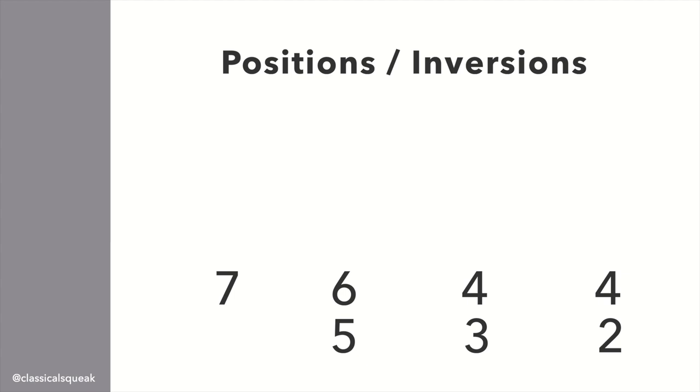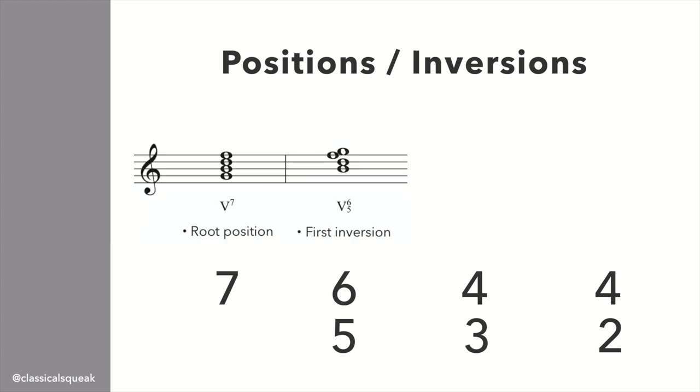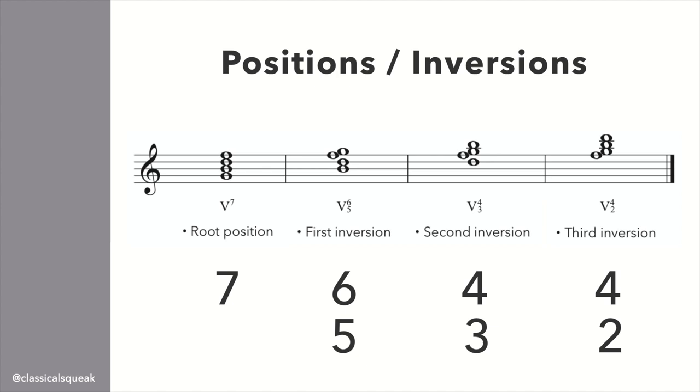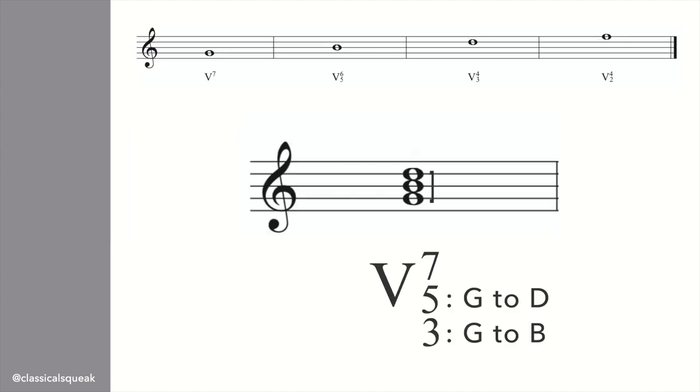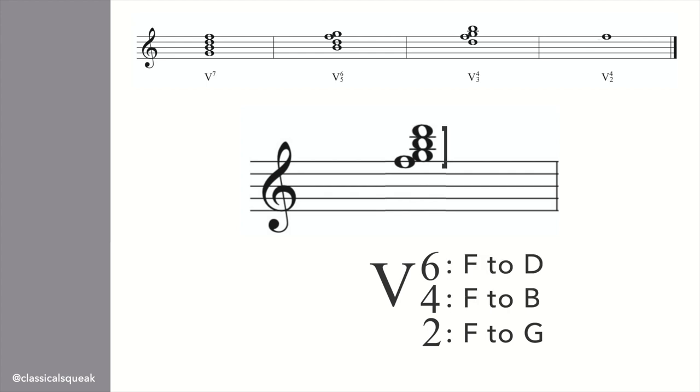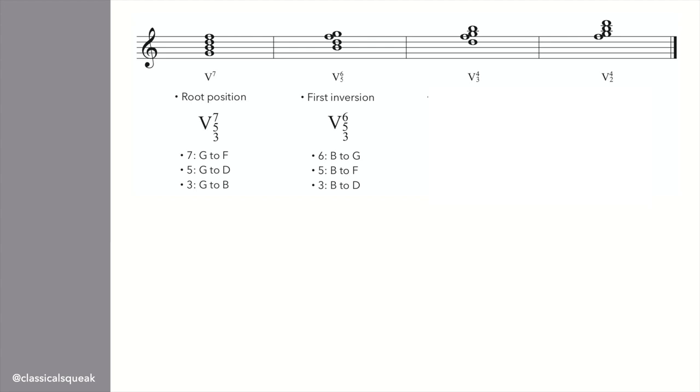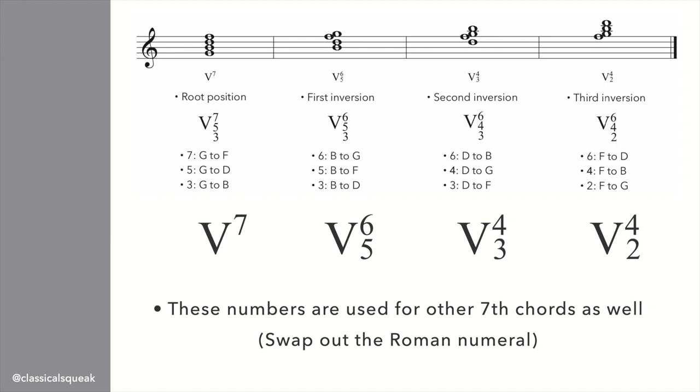All right, on to these numbers. The abbreviated form is what you'll commonly see. 5-7, 5-6-5, 5-4-3, and 5-4-2. The long form is 5-7-5-3, 5-6-5-3, 5-6-4-3, and 5-6-4-2. This works the exact same way as triads, but we have an additional note. First one, G to B, G to D, G to F. Next is first inversion, B to D, B to F, B to G. Second inversion, D to F, D to G, D to B. And last, F to G, F to B, and F to D. For 7th chords, we have root position, first inversion, second inversion, and third inversion. We'll continue with the abbreviations for the examples, because that's likely what you'll see.